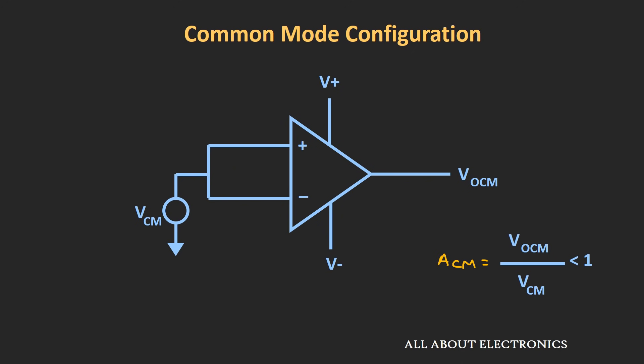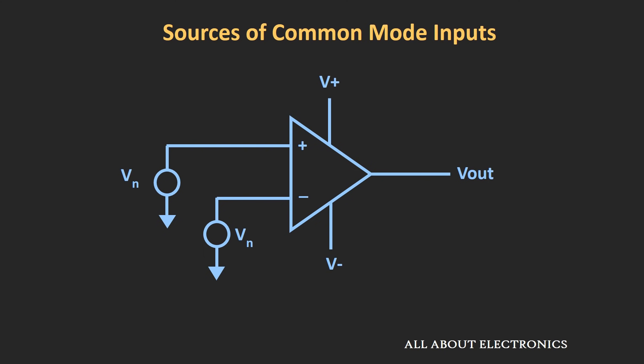Let us see some of the sources which act as a common mode input signal for this op-amp. The most common source is the 50 or 60 Hz noise signal, which is present at both input terminals. Apart from that, whenever the circuit is operated in a high electromagnetic field, the electromagnetic interference coupled to the circuit is also common to both input terminals. These are some of the sources of the common mode input signal.